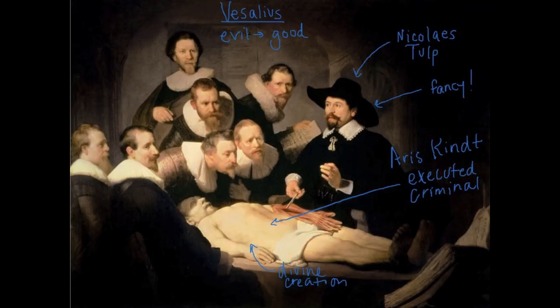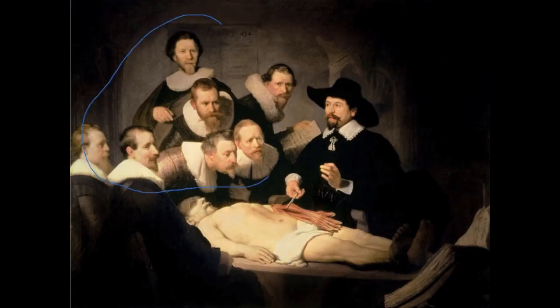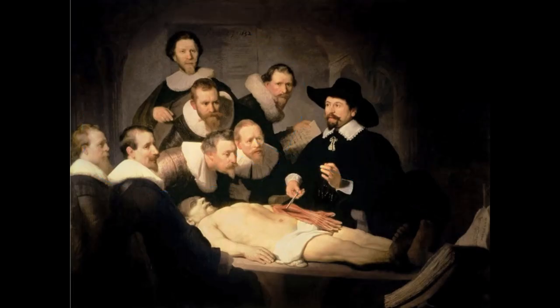The other men in the painting can be identified through the list that this man holds. But who cares? They all appear seemingly as a many-headed organism with the common goal of learning about the muscles in the arm. Notably, Tulp is studying the man's hand, which, according to classical sources, is an exemplar of God's wisdom. Hands allow men to build civilization.